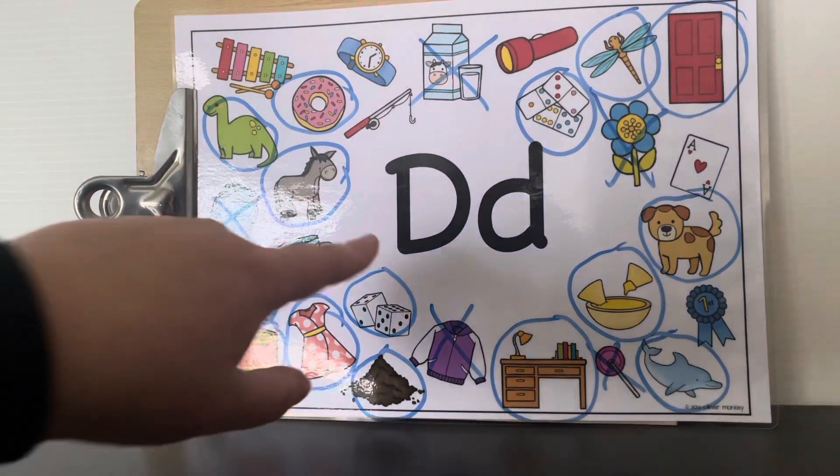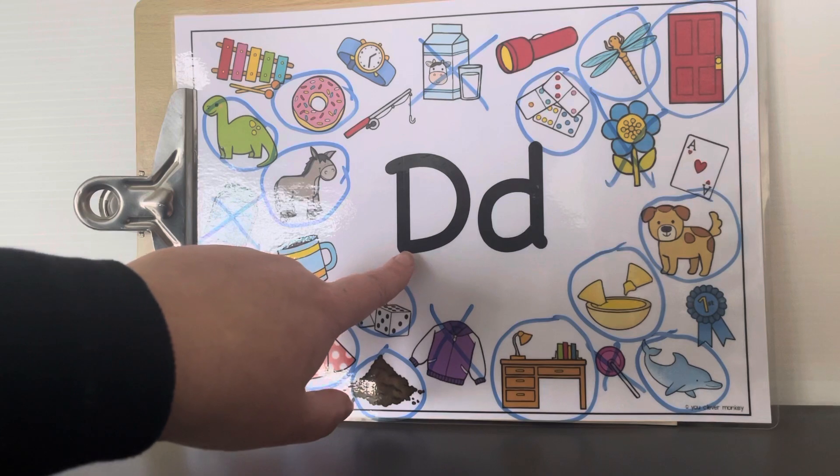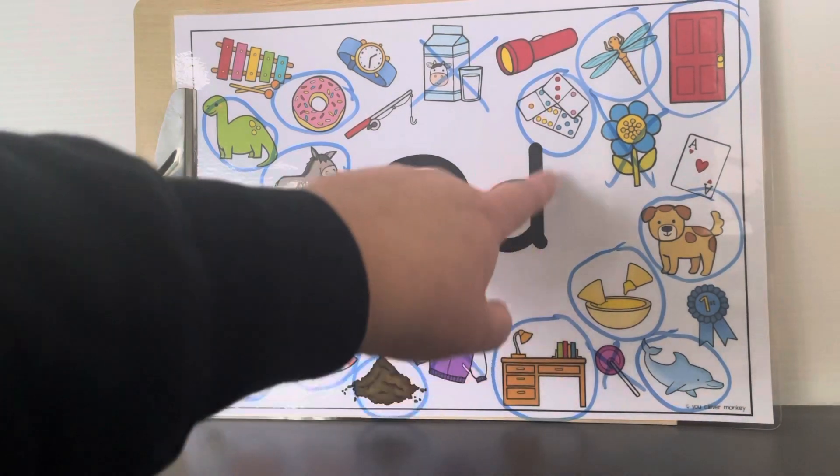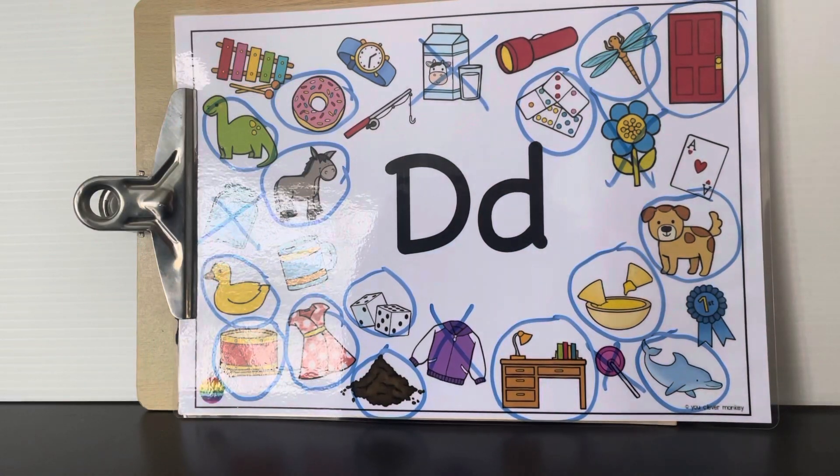All right. Remember this is our uppercase letter D. This is our lowercase letter D. Open mouth, tall stick. And the sound is D. Well done.